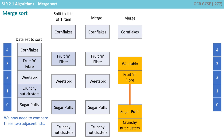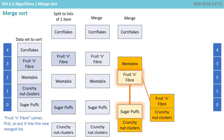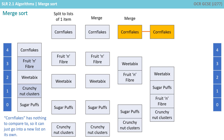We repeat the algorithm, and we now need to compare these two adjacent lists, which were merged from the previous single item lists. We compare the first item in the first list with the first item in the second list. Crunchnut Clusters comes first, so we put it into a new merged list. We now compare Sugar Puffs with the first item in the other list, which is still Fruit and Fibre. Fruit and Fibre comes first, so we put it into the new merged list. We now compare Sugar Puffs with Weetabix — Sugar Puffs comes first, so we add it to the new merged list, followed by Weetabix. Cornflakes is still in a list on its own and has nothing to compare itself to, so it can just go into a new list on its own.